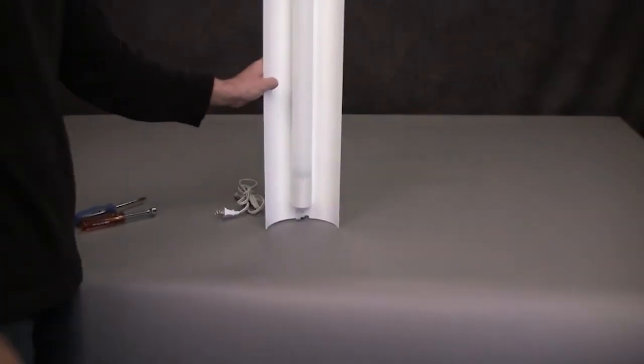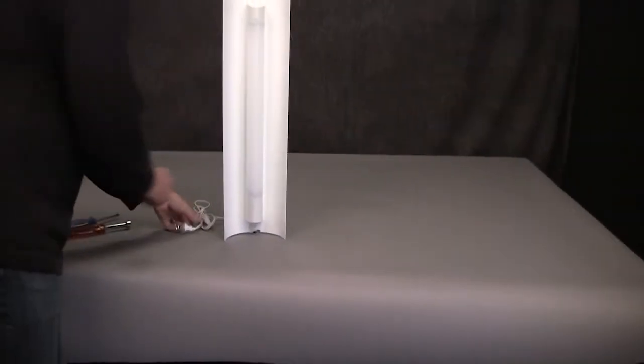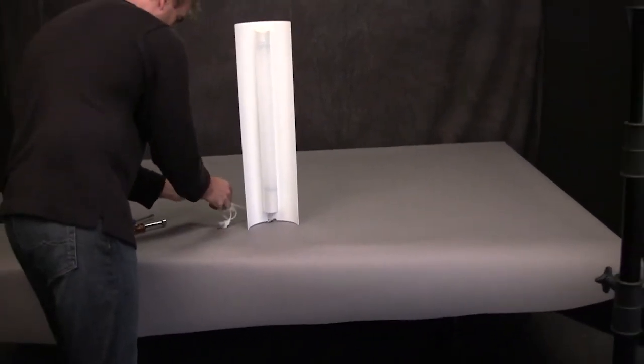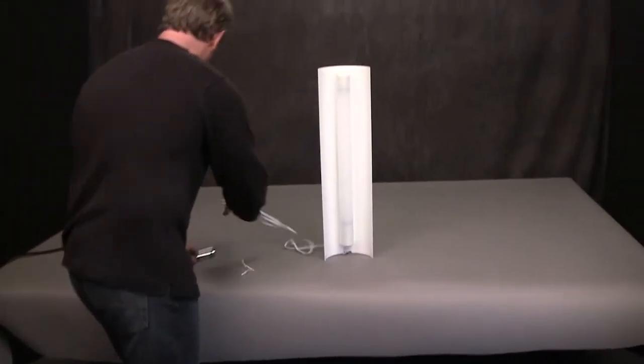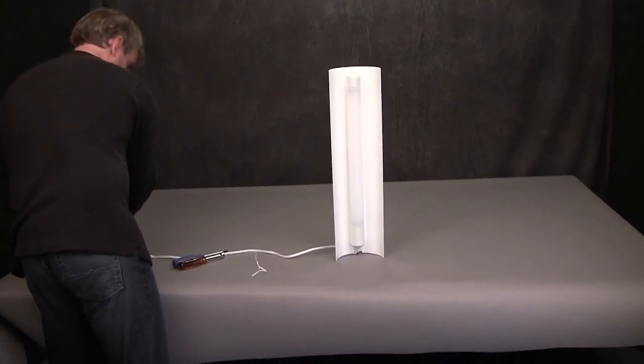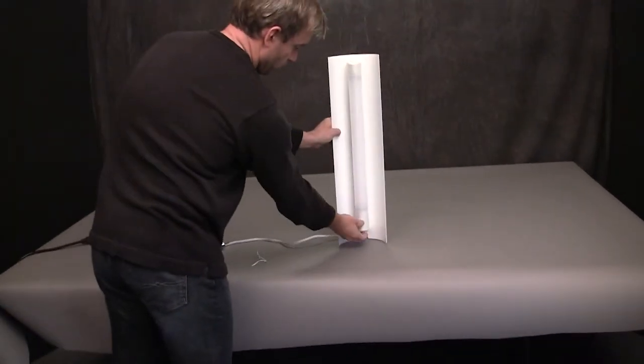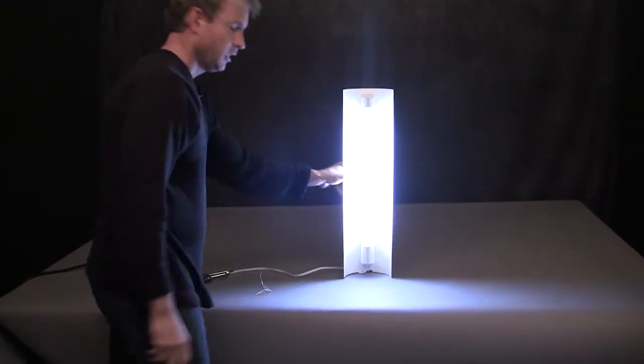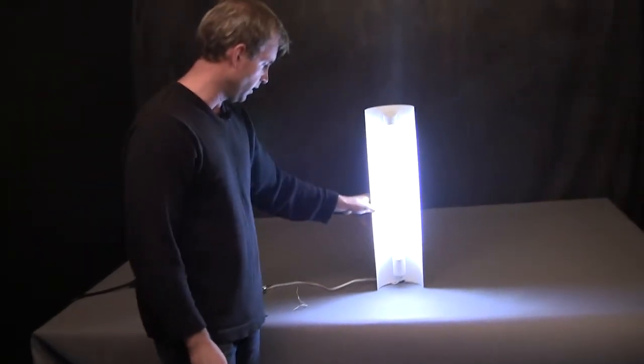Now I am going to undo the cord, plug it in real quick and switch it on. And there you go. There's a completed accent light.